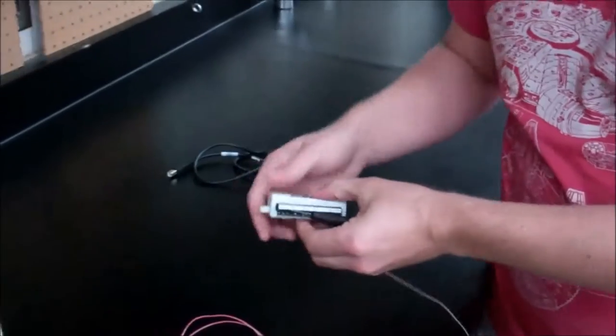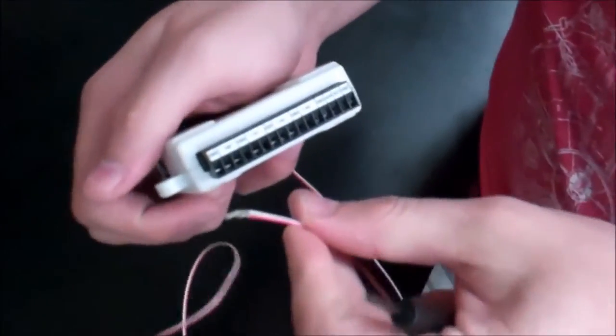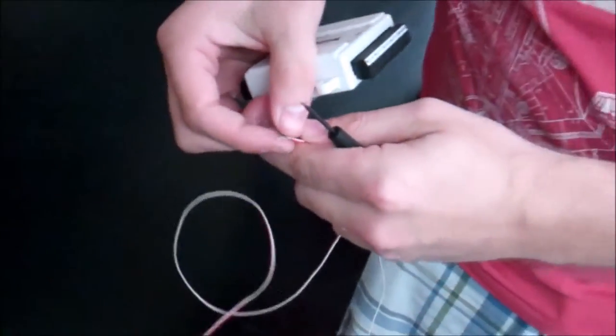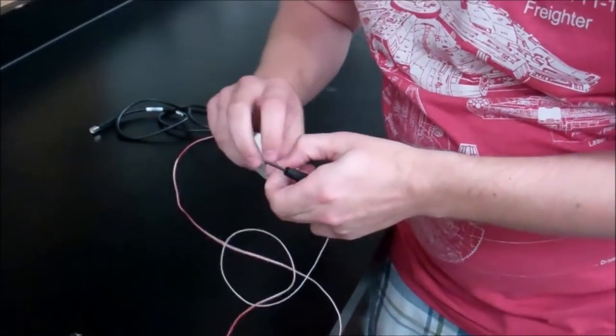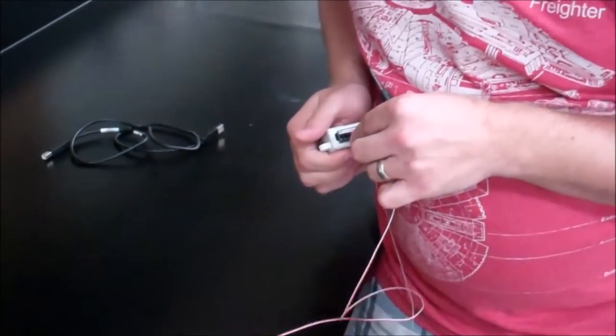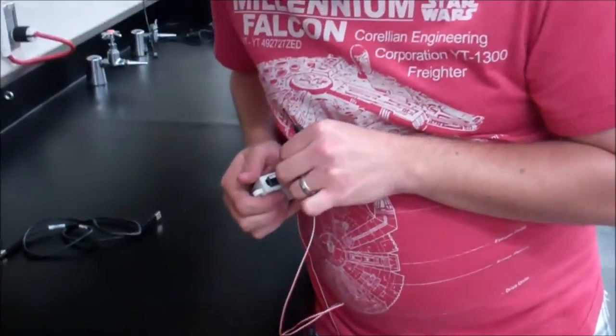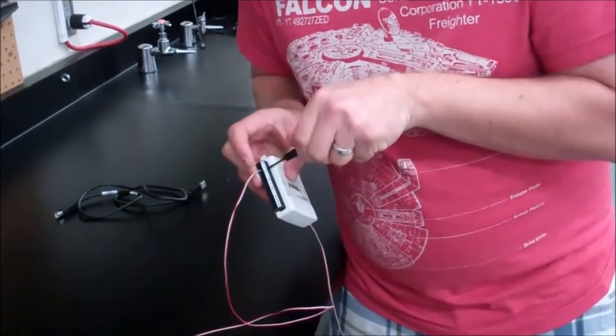Now you're going to go to your analog side and you're going to hook the red one into AI0+, the white one into AI0-. Then make sure those are nice and tight in there.